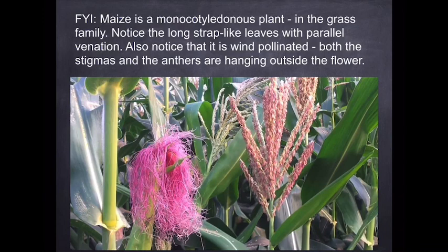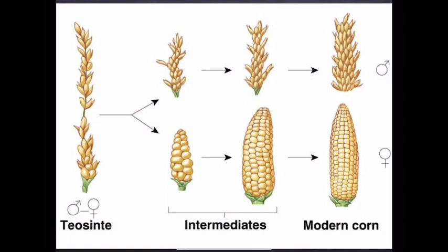Just to refresh your memory from Grades 10 and 11, maize is a monocotyledonous plant — you can see the strappy leaves with their parallel venation. It's also important to notice this is a wind-pollinated plant; the stigmas and anthers stick out so pollen can be blown by the wind from male to female. The male flowers are always at the top of the plant and the female flowers further down, so pollen falls downward by gravity to reach the female flower. Originally, maize was known as teosinte, and male and female flowers existed in the same flower. Through artificial selection we ended up with separate male and female flowers for better maize production.